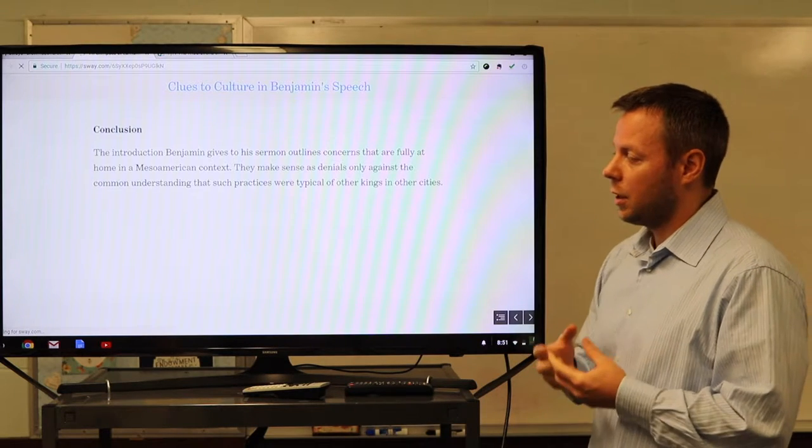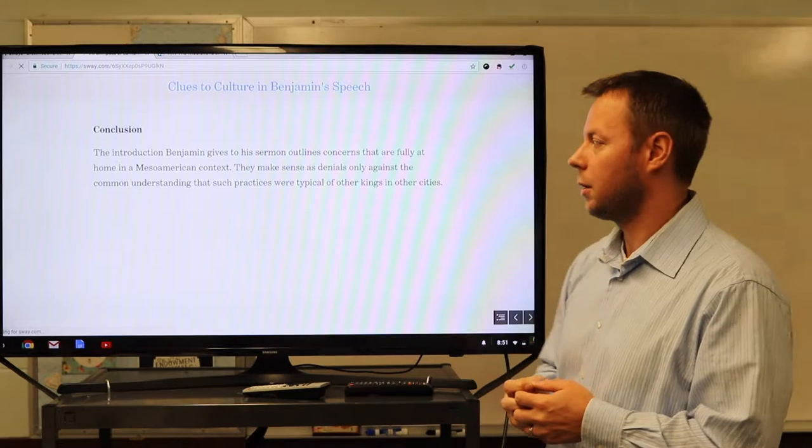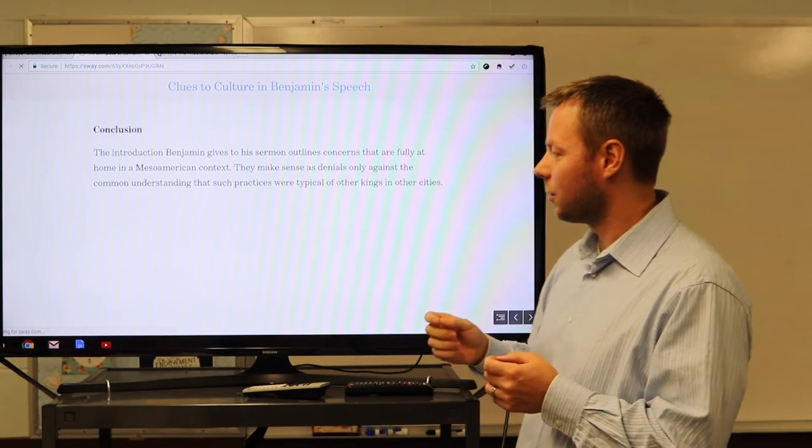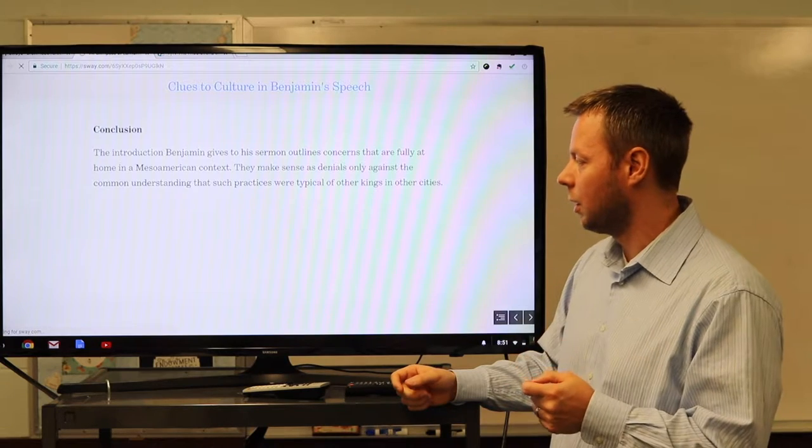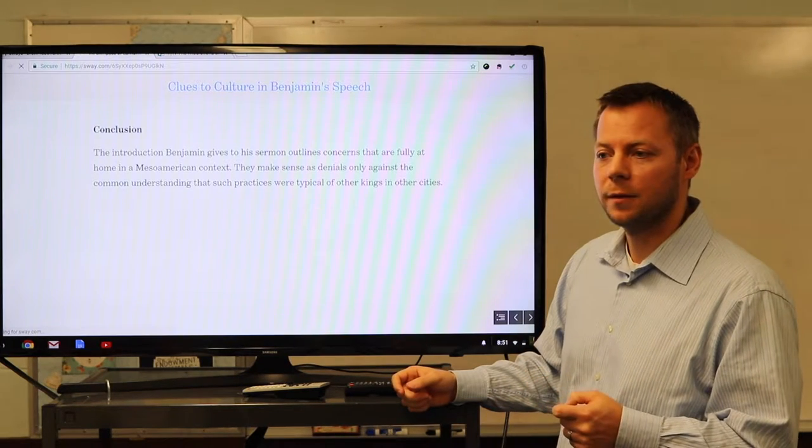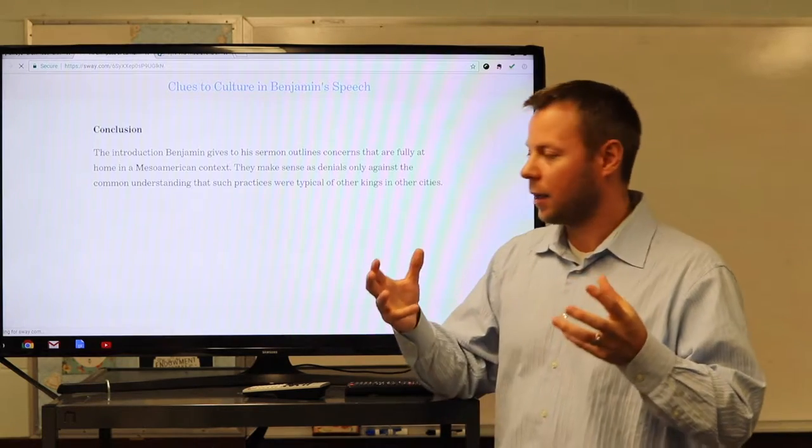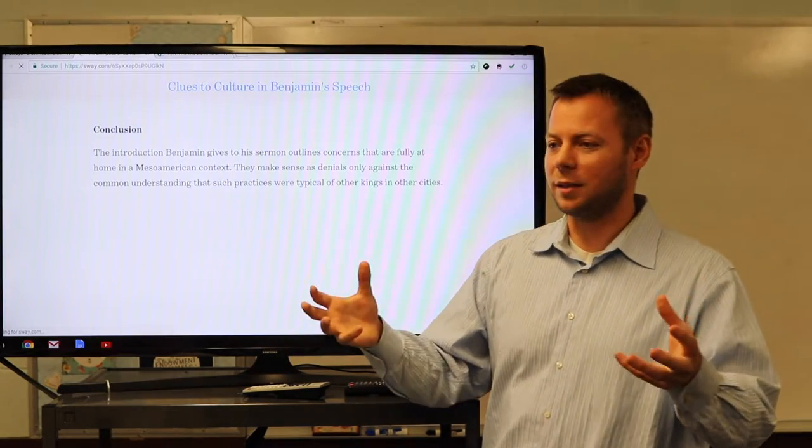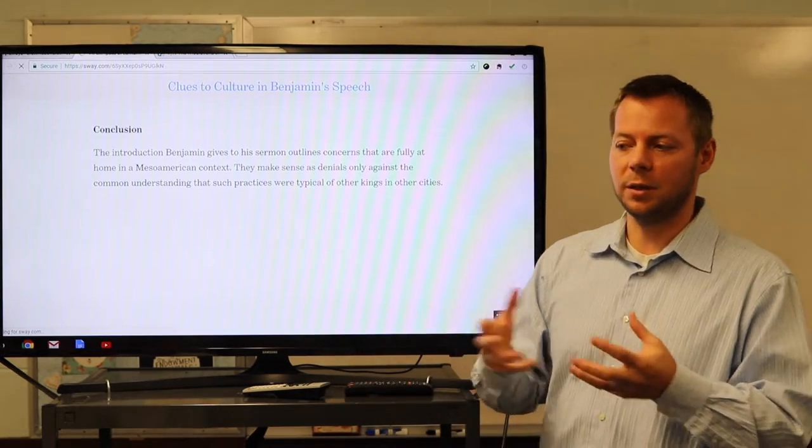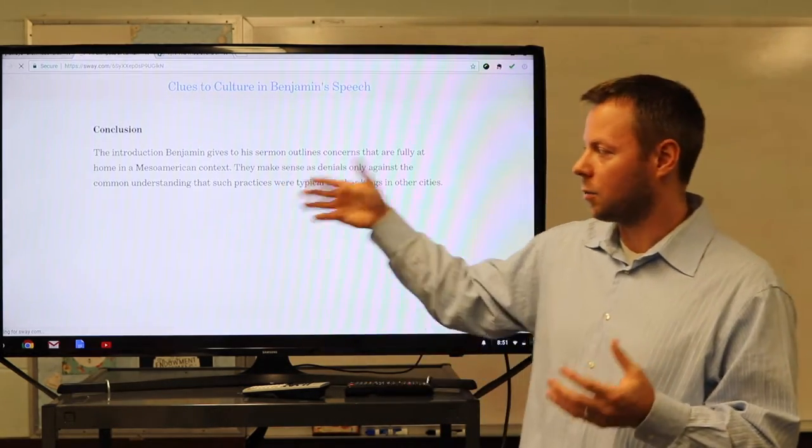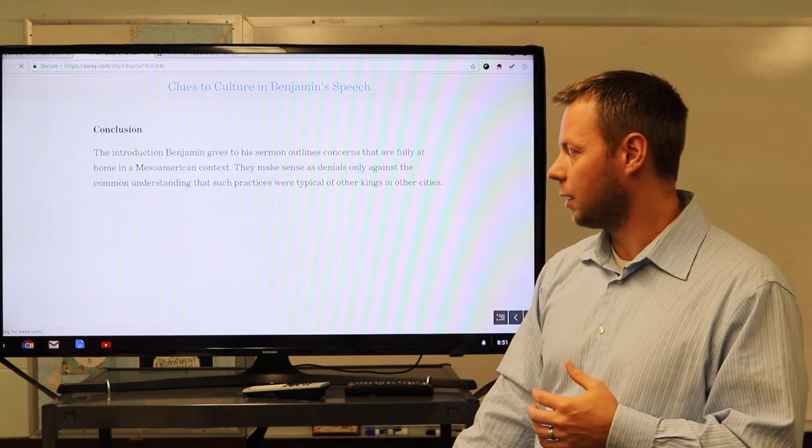What's our conclusion? The introduction Benjamin gives to his sermon outlines concerns that are fully at home in a Mesoamerican context. It makes sense as denials only against the common understanding that such practices were typical of other kings and other cities. Right? We talked about how the hardest thing about a text is understanding the cultural assumptions that are coming with that text that are unstated. These are cultural assumptions that are unstated in the text because everyone understood them. And that's why it makes sense only when we understand those unstated assumptions.